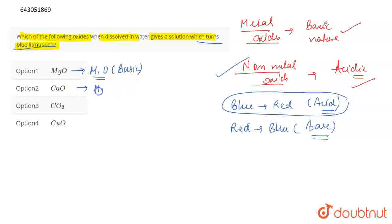CaO is a metallic oxide which means that it is basic in nature. Talking about carbon dioxide which is CO2, carbon is a non-metal. So, this is a non-metal oxide which means that this is acidic in nature. And CuO is a metallic oxide because copper is a metal which means that it is basic in nature.